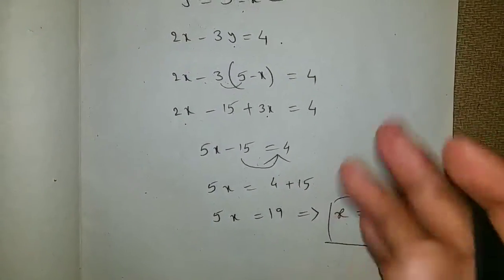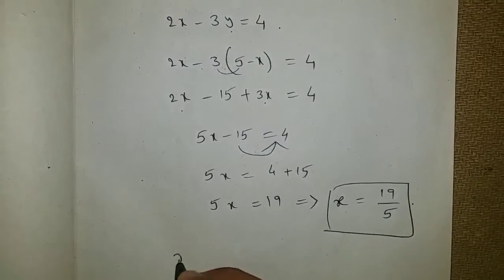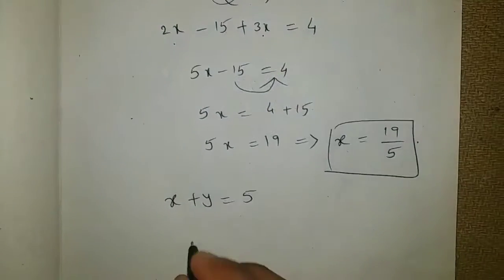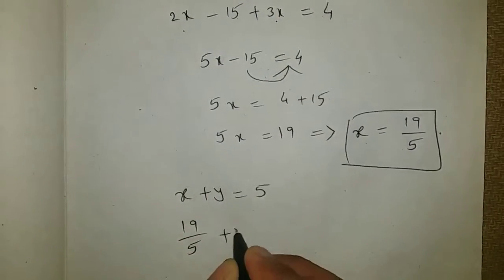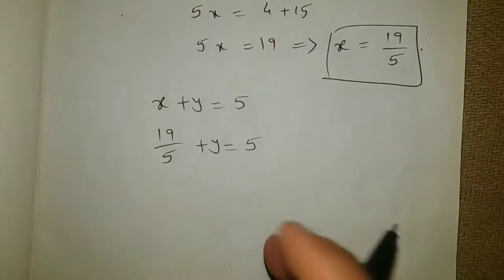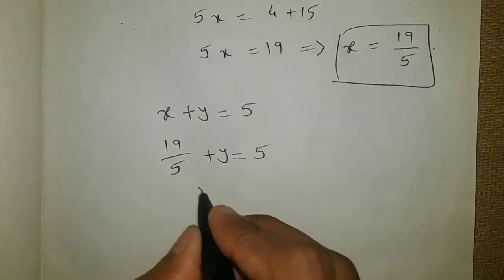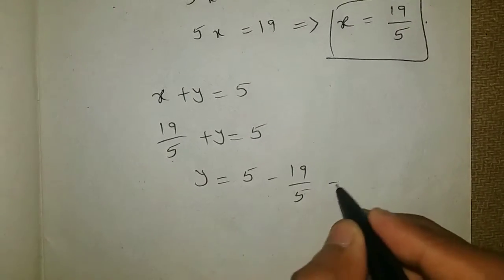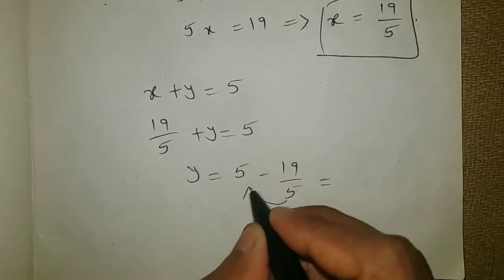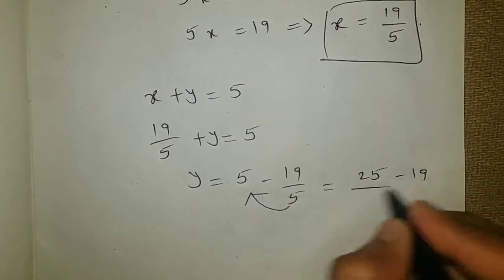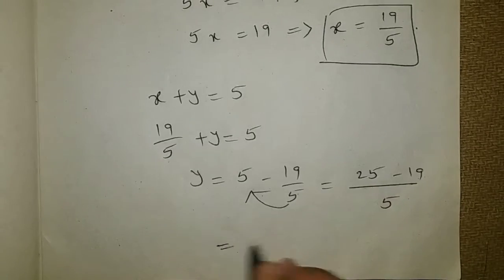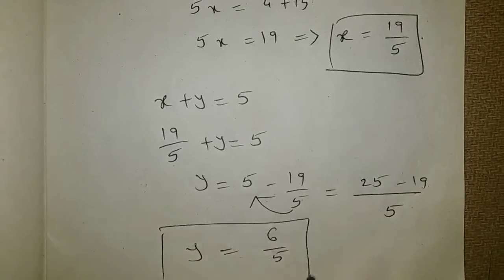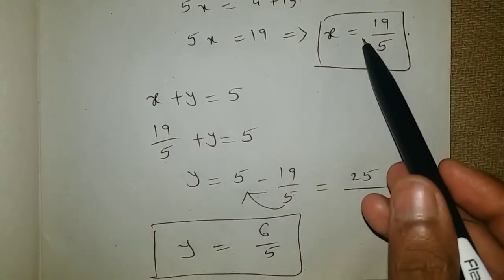Now this x value I will substitute back into the first equation: x plus y equals to 5. In the place of x, substituting 19 by 5: 19 by 5 plus y equals to 5. Taking 19 by 5 to the other side: y equals to 5 minus 19 by 5, which equals 25 minus 19 by 5, giving 6 by 5. So y value is 6 by 5 and x value is 19 by 5.